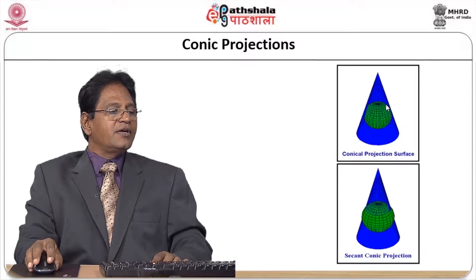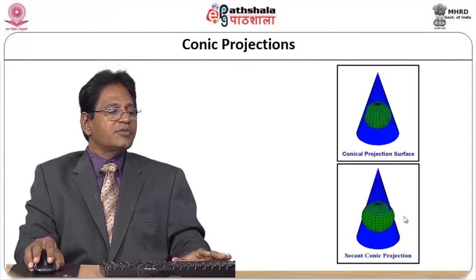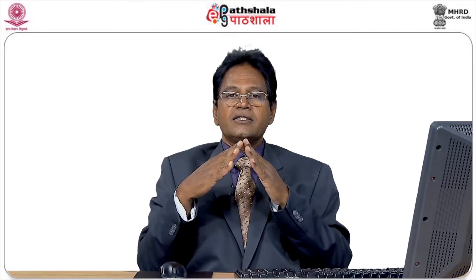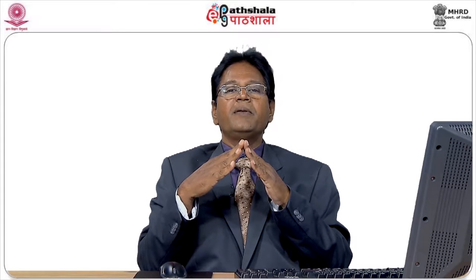The conical projection surface: one is your plane where you just put it inside, and the second conical projection has a slight overlap or projects outside. Lambert conformal conical projection is one of the very vital ones, where your parallels are all arcs of concentric circles — all the latitudes will be arcs of concentric circles. Meridians are straight and converge on one point.